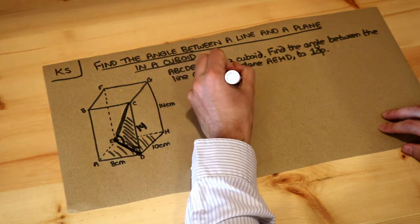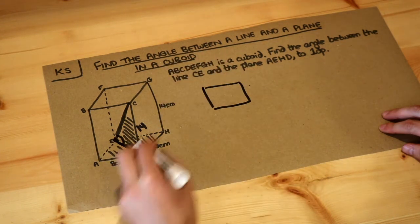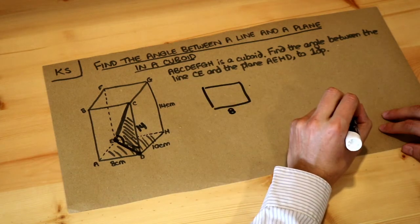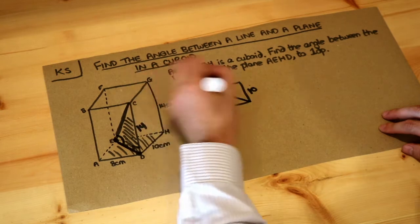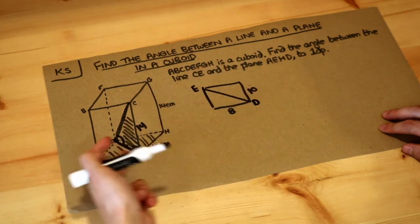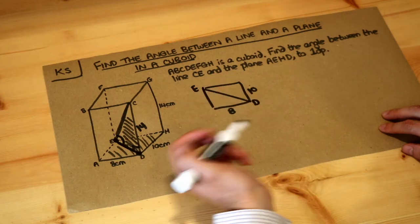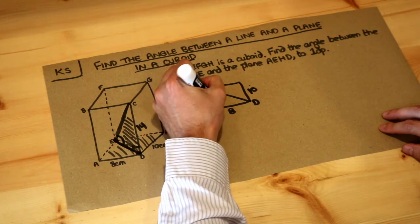Well if you look sort of like a bird's eye view, we've got the 8 here and we've got the 10 here, and we're trying to find ED. That's E and that's D, that's kind of like a view of the bottom, this diagonal here. We're trying to find, well we could just use Pythagoras to find that, couldn't we?